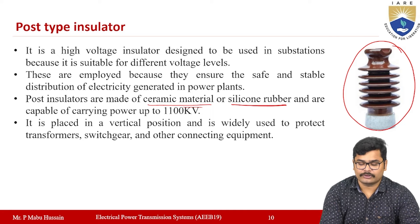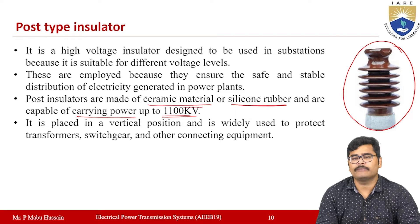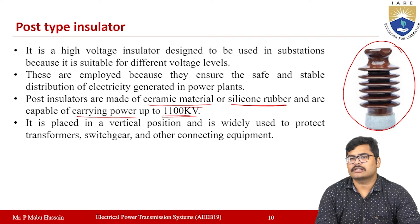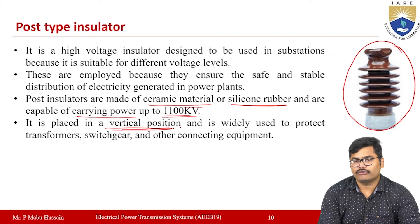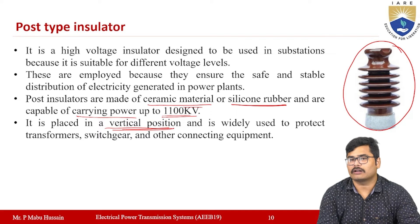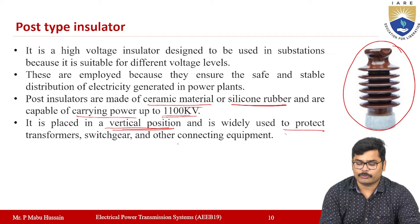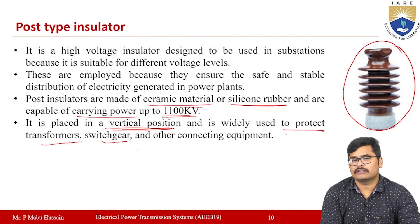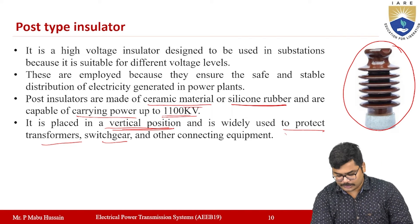Post type insulators are capable of carrying power up to 1100 kV — they can be used for both low and high voltage levels. Because of this flexibility, they are mainly used in substations and distribution systems. They must be placed in the vertical position and are widely used to protect transformers, switchgear, circuit breakers, lightning arresters, and other connecting equipment.